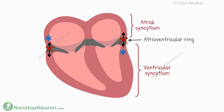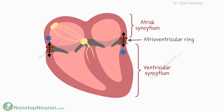This is very important, because for effective pumping, the atria need to contract first and empty their blood into the ventricle before the ventricle finally pumps all the blood out of the heart. The only point from where the impulse can pass from the atria to the ventricles is by the AV bundle. It takes impulses from the SA node to the ventricles after a delay, to initiate ventricular contraction after the atria have emptied their blood into the ventricles.